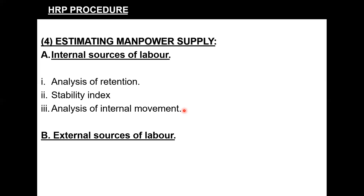When internal sources are not adequate, the manager also taps external sources — searching for labor from the outside market. This could include campus recruitments, office publications, data supplied by the government, or population census data. Such data helps the organization get information on external sources of labor. This is how manpower supply is estimated.